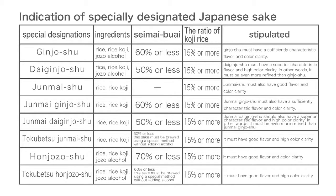So far we've looked at the items that must be labeled. Now let's look at the indication of specially designated Japanese sake. There are three main categories of specially designated Japanese sake: ginjoshu, junmai-shu, and honjōzō-shu. Each of these categories has specific requirements, and there are a total of eight special designations.